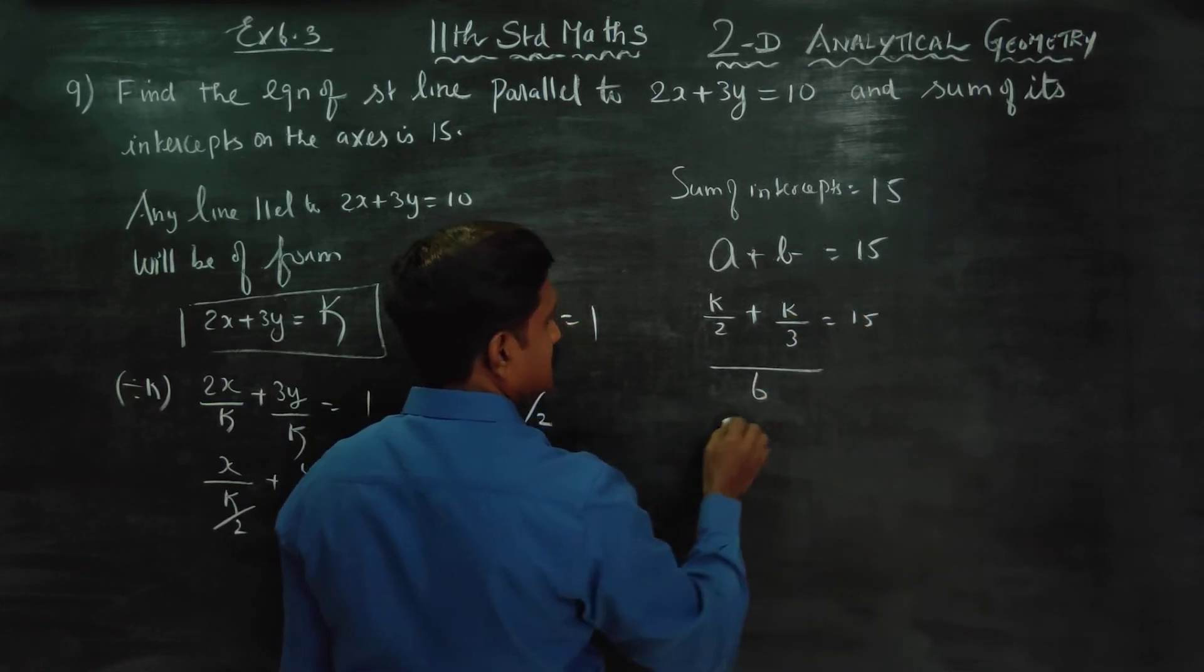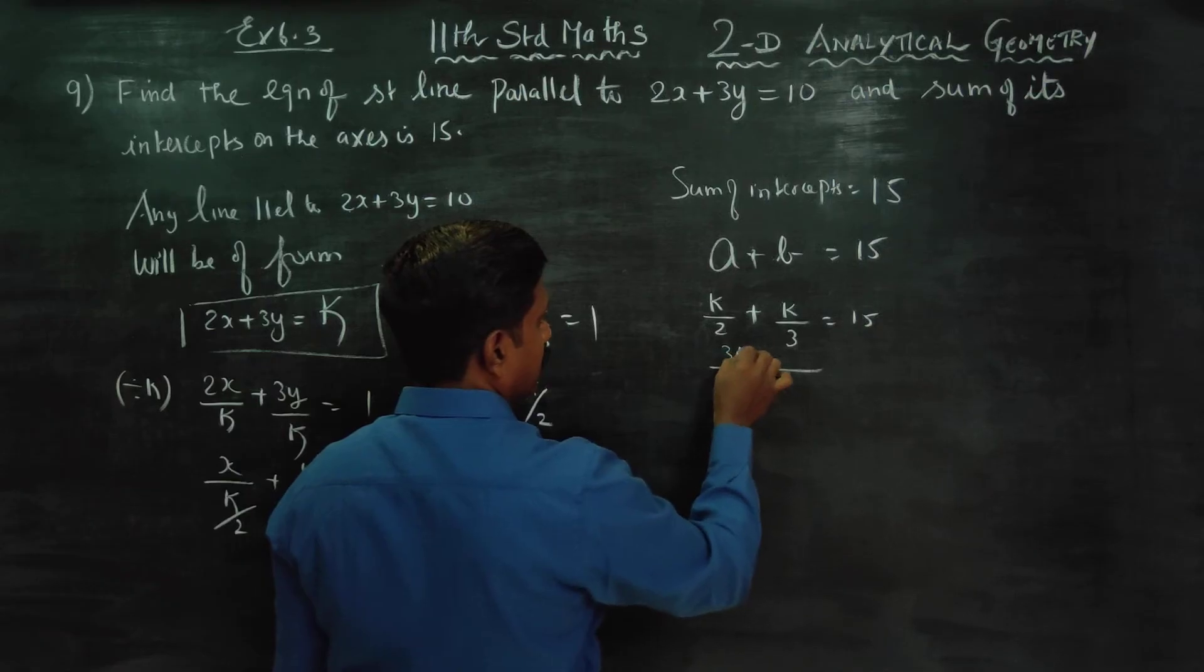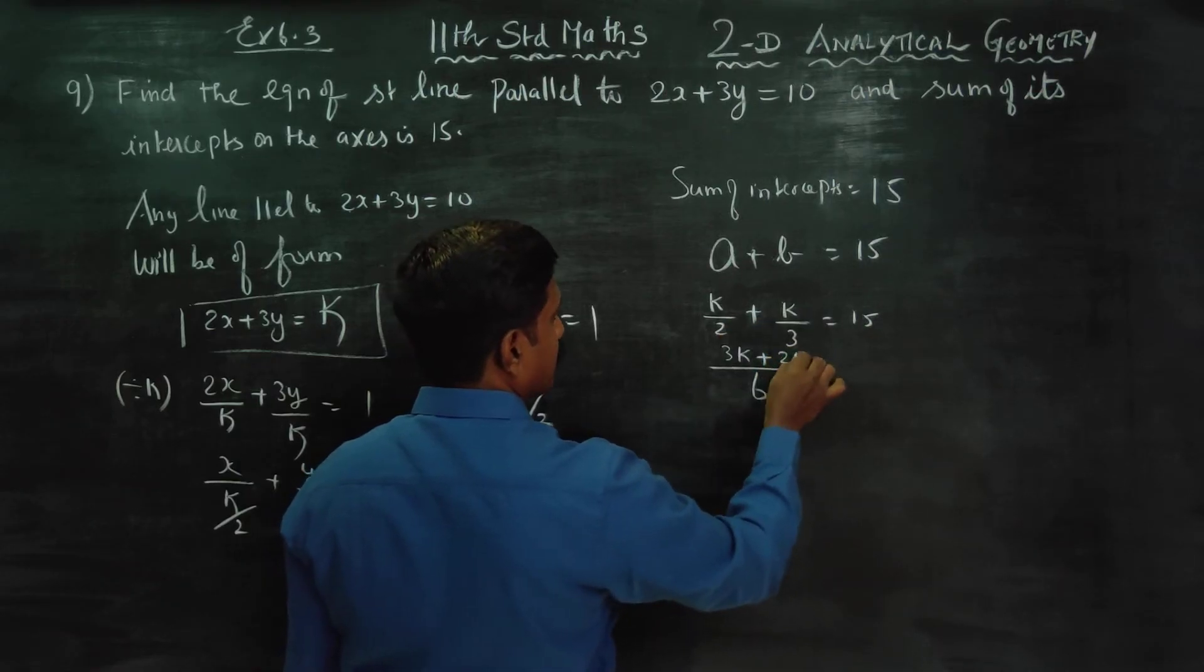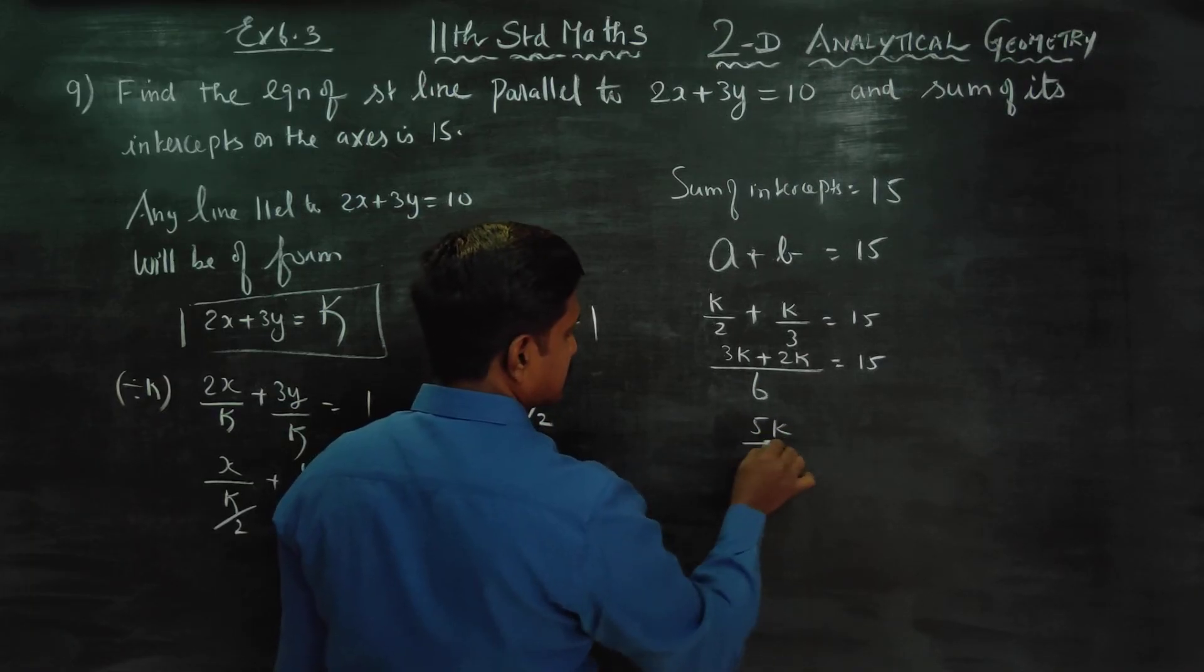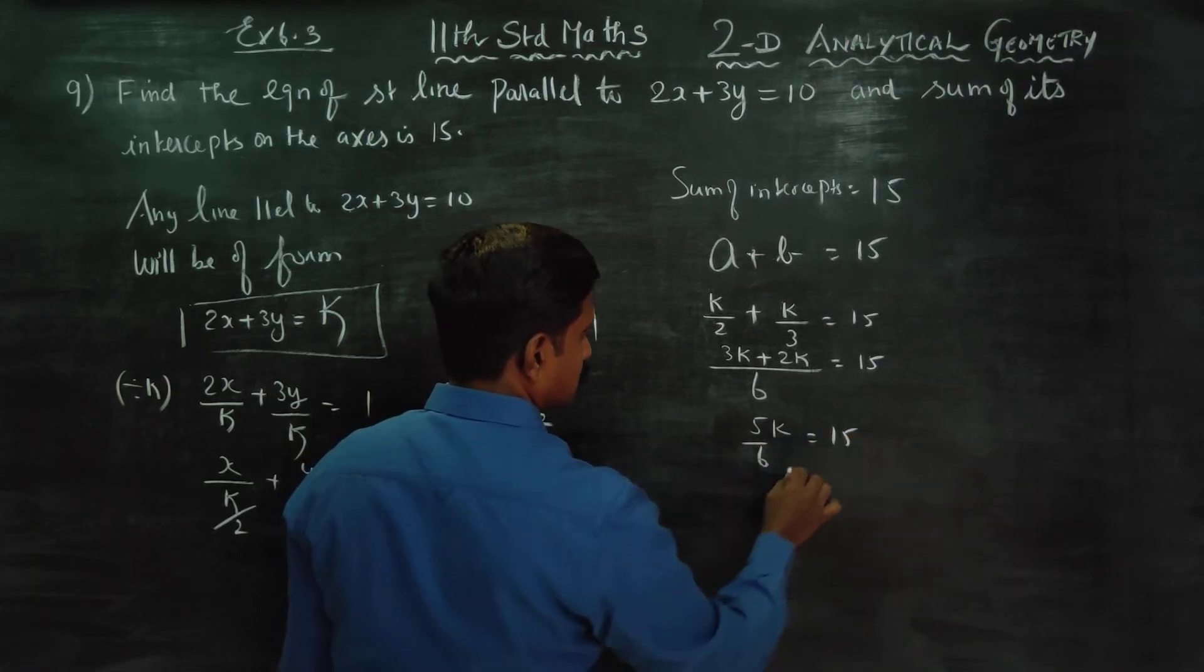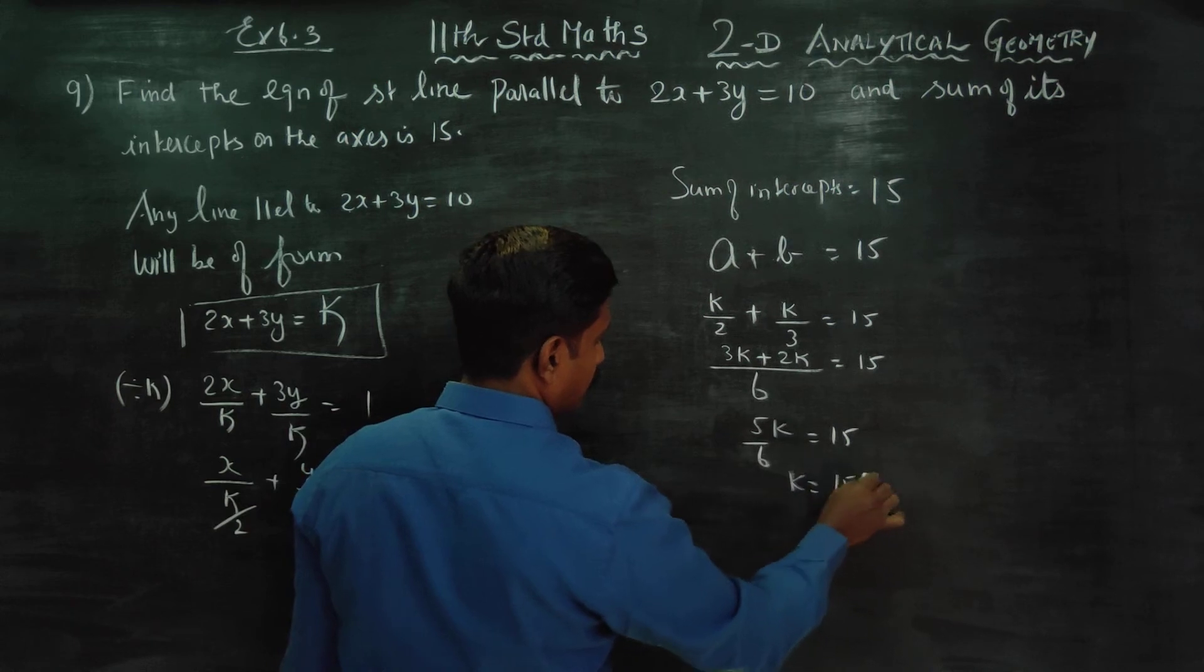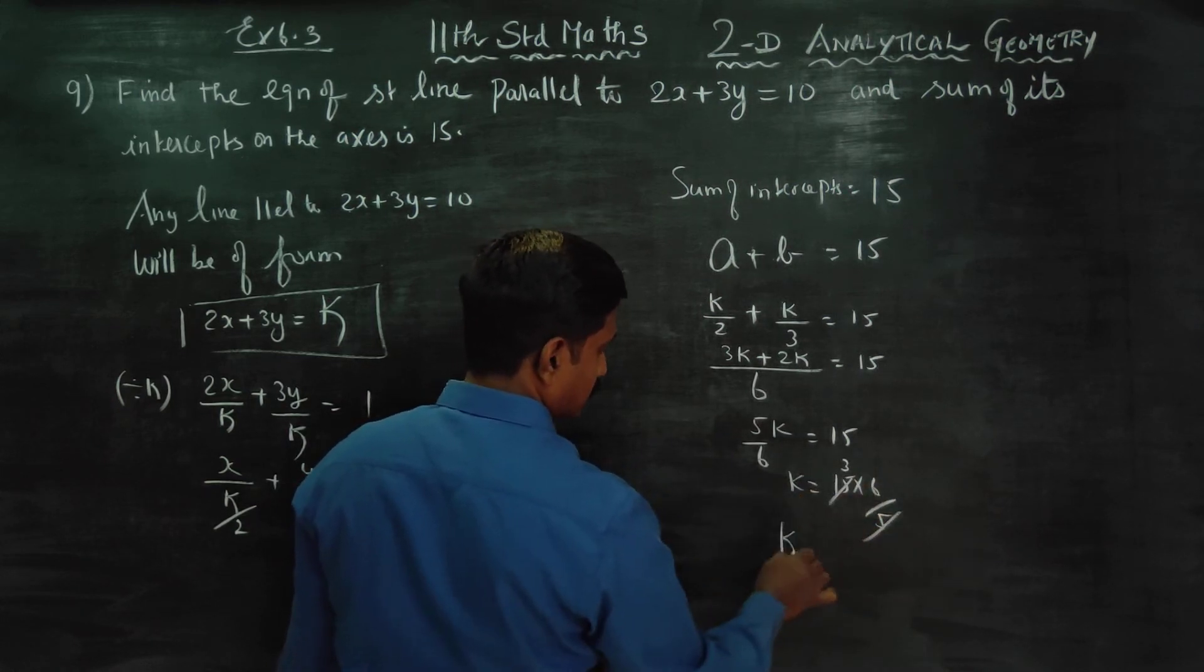Taking LCM as 6 and cross multiplying: 3k plus 2k equals 90, so 5k equals 90. Cross multiply: k equals 15 times 6 by 5, which cancels to give k equals 18.